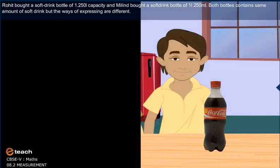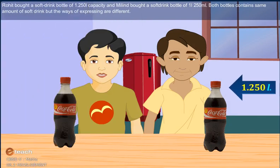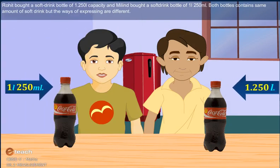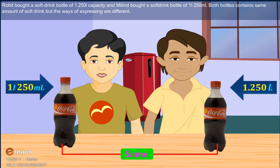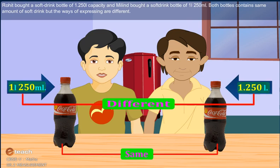Rohit bought a soft drink bottle of 1.250 liter capacity and Milind bought a soft drink bottle of 1 liter 250 ml. Both bottles contain the same amount of soft drink but the ways of expressing are different.